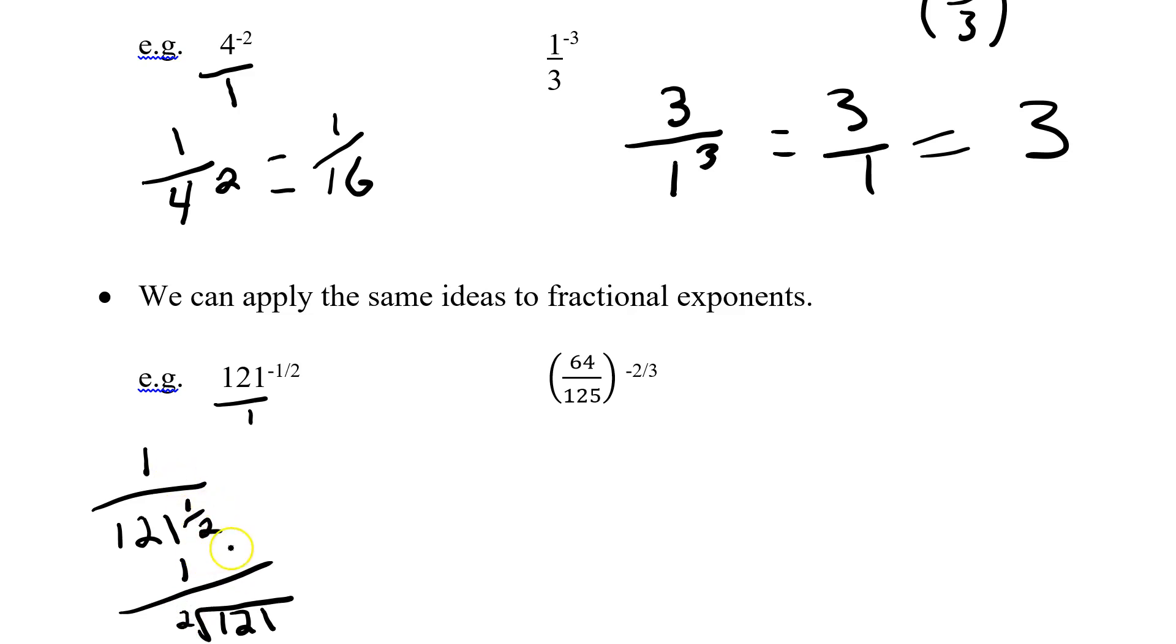So I essentially have 1 over the square root of 121. And of course I can simplify the square root of 121 to 1 over 11. So 121 to the negative 1 half becomes 1 over 11.